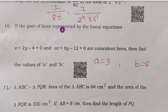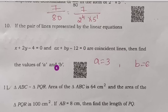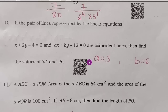Tenth question: if the pair of lines represented by x + 2y − 4 = 0 and ax + by − 12 = 0 are coincident lines, find the value of a and b. For coincident lines, a₁/a₂ = b₁/b₂ = c₁/c₂. Using 1/a = 1/2 = 4/12, we get a = 3 and b = 6.